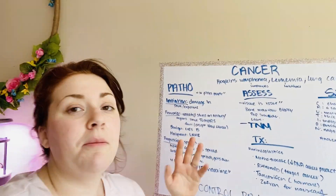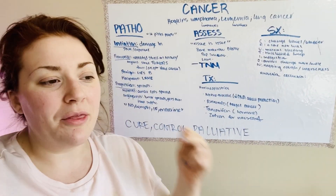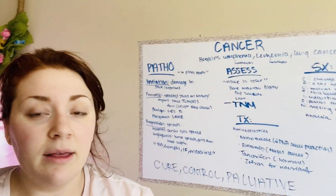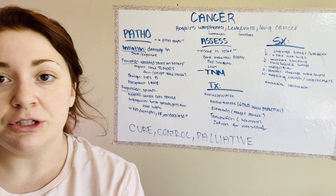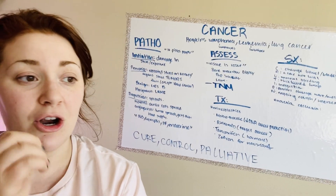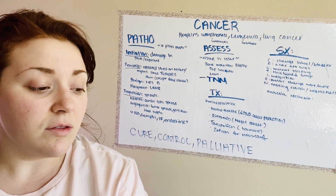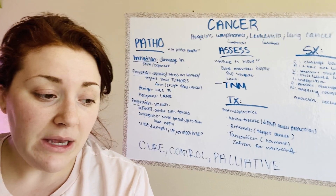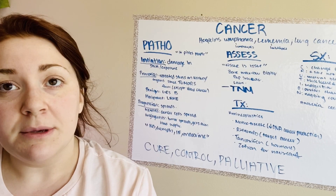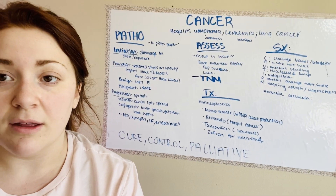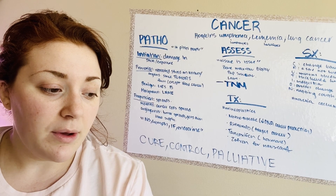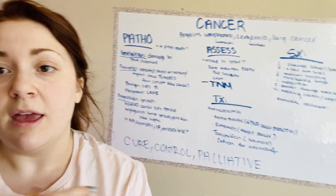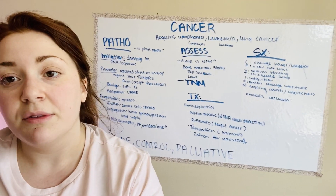Now malignant — remember that like Maleficent, this is the evil one, the bad one. With malignant, I remember the mnemonic LAME: L is lack of contact inhibition — it doesn't care if it's going to hurt other tissues or organs. It's going to be aggressive growth; it's a mean cell. M is metastasis, which is just a fancy word for how the cancer spreads. It metastasizes via the blood or the lymph. E — it escapes into other tissues. Cancer loves to spread.